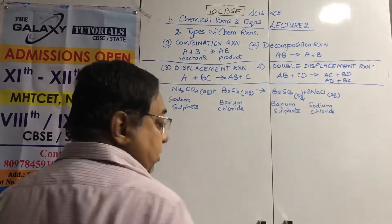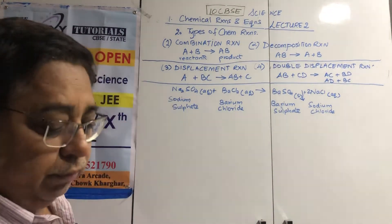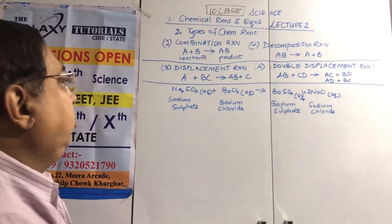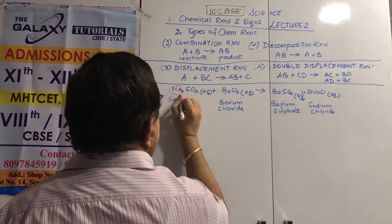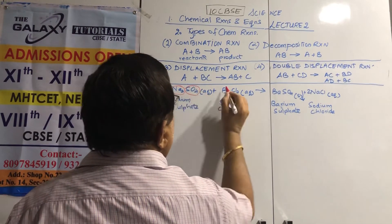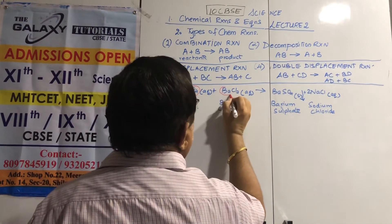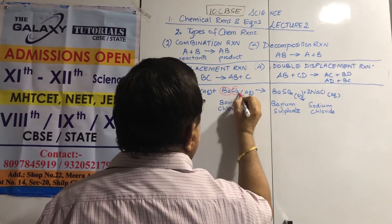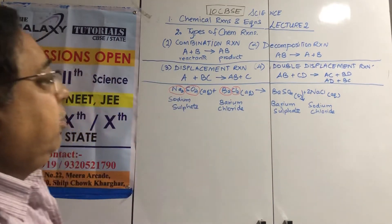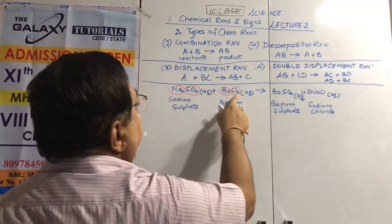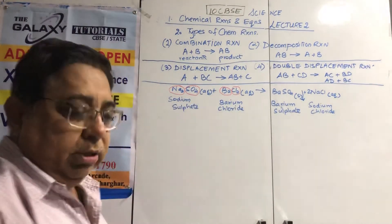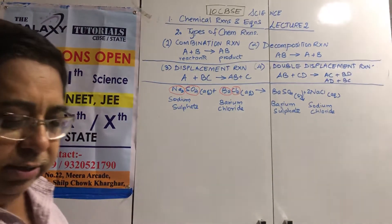As you can see: sodium goes with chlorine and barium goes with sulfate — they exchange their partners. Each compound has one group, and we interchange the groups.